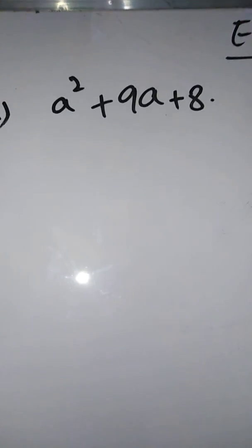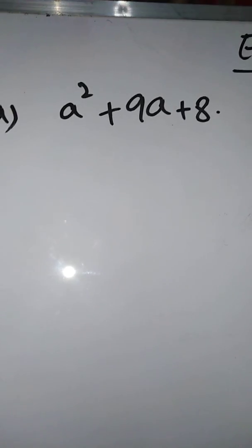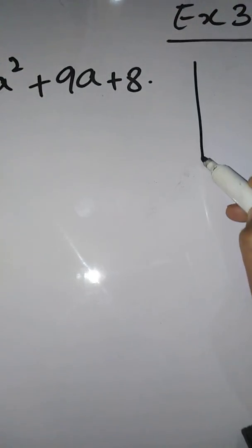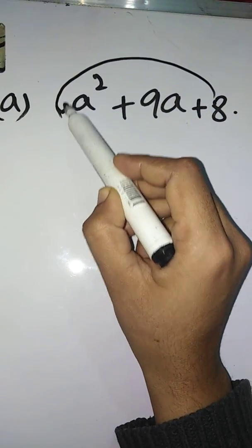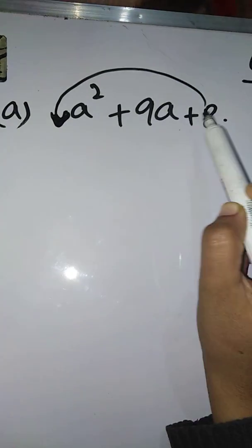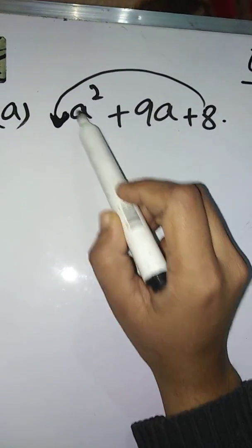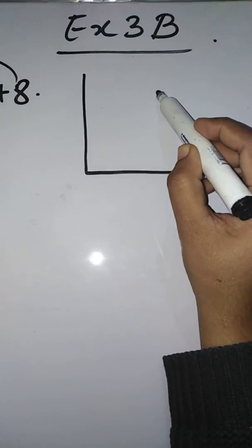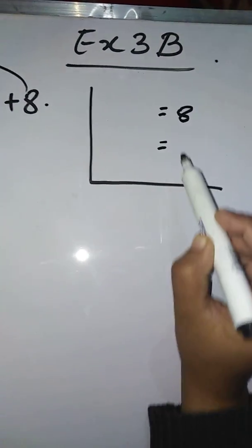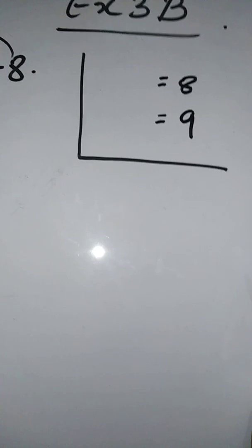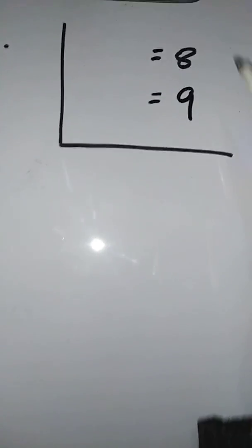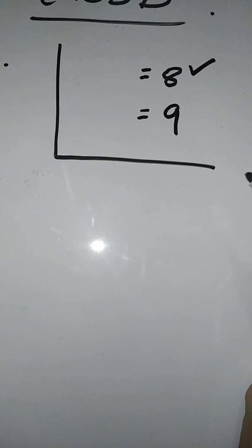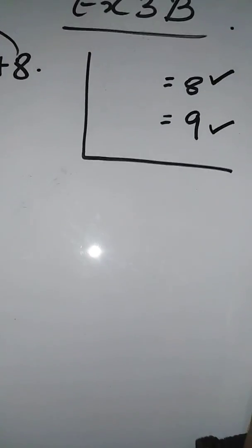Part (a) is a² + 9a + 8. The first step is to multiply the first and the last number. The coefficient is 1, so you multiply first and last: 1 × 8 = 8. Then write the mid number, which is 9. Now find two factors that when multiplied give 8, and when added or subtracted give 9.